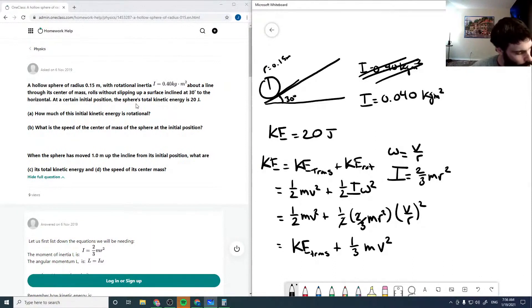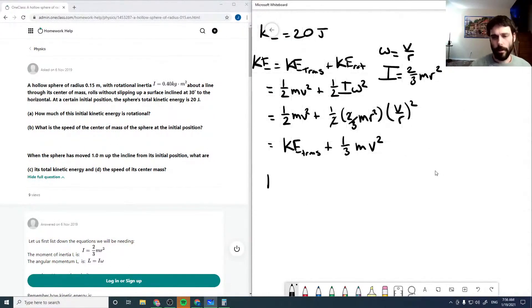So we get a third mv squared. And so then, how did I work this through here? Sorry, our rotational energy is one third mv squared. How did I do this here? I should have worked this through a better way here.